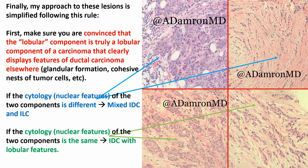Whereas if the cytology features are the same between components — so you have a ductal component with grade two cohesive tumor cells, and then an area with some single filing but the nuclear cytology looks the same as the ductal area — those are the cases where I'm going to say this is an IDC with lobular features. The key distinction is whether the cytology is truly different between the two components.